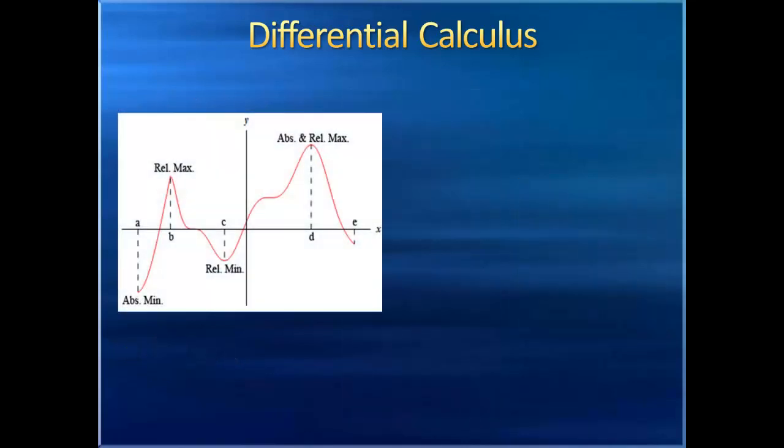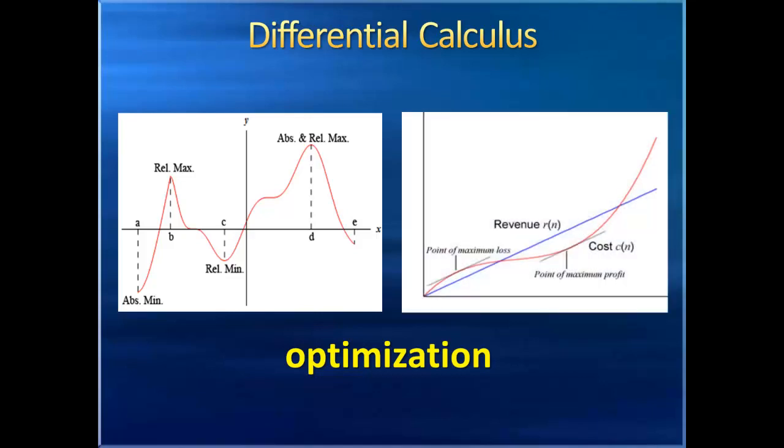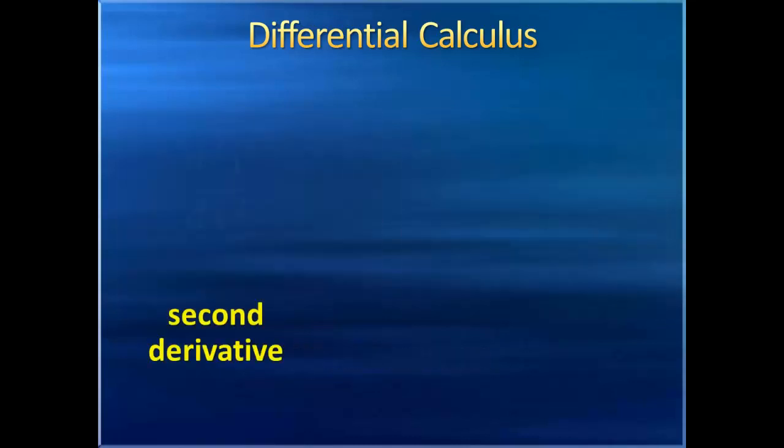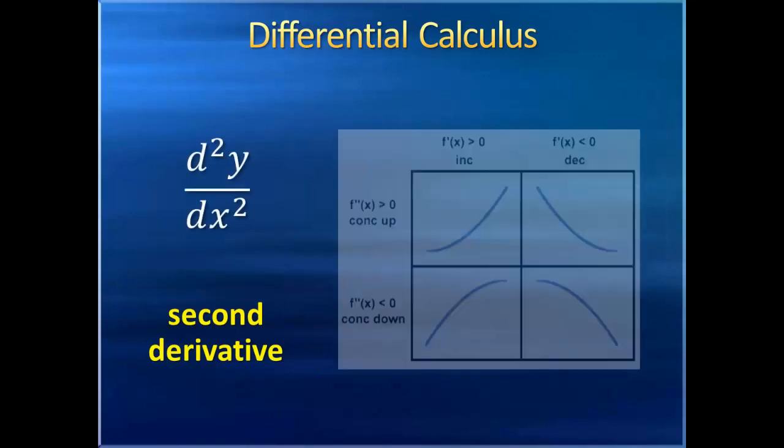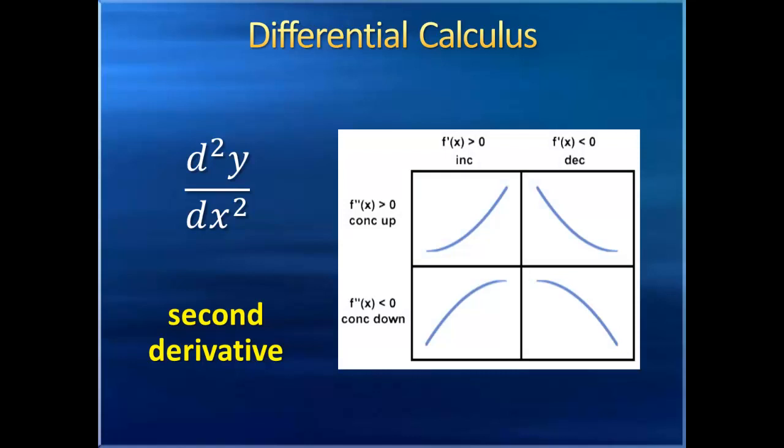Derivatives have many uses, such as finding the relative maxima and minima of a function, which we call optimization. In fact, optimization is a branch of mathematics of its own that's useful for all sorts of applications, such as minimizing energy consumption or maximizing profit. We can even find derivatives of derivatives, called second derivatives, and so on, which tell us about the concavity and curvature of a graph.